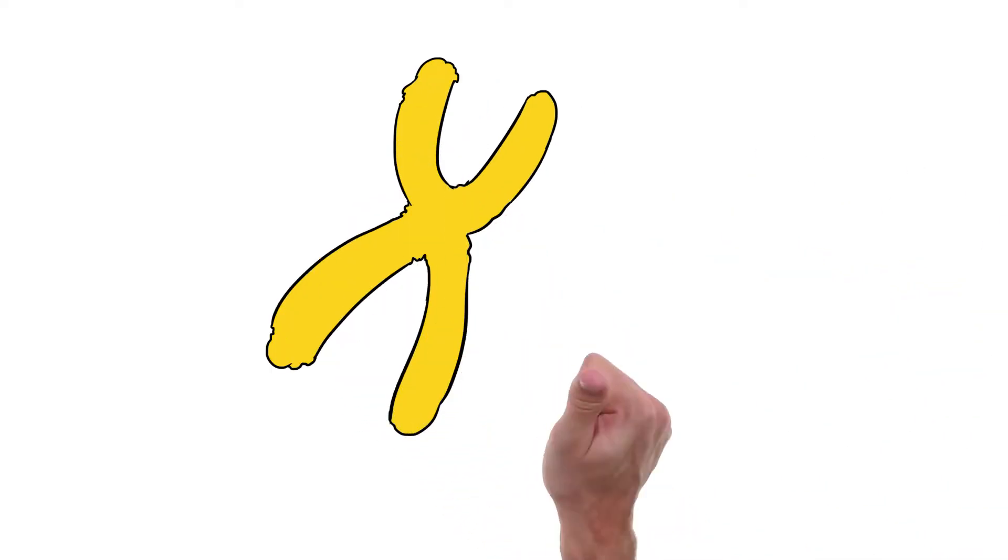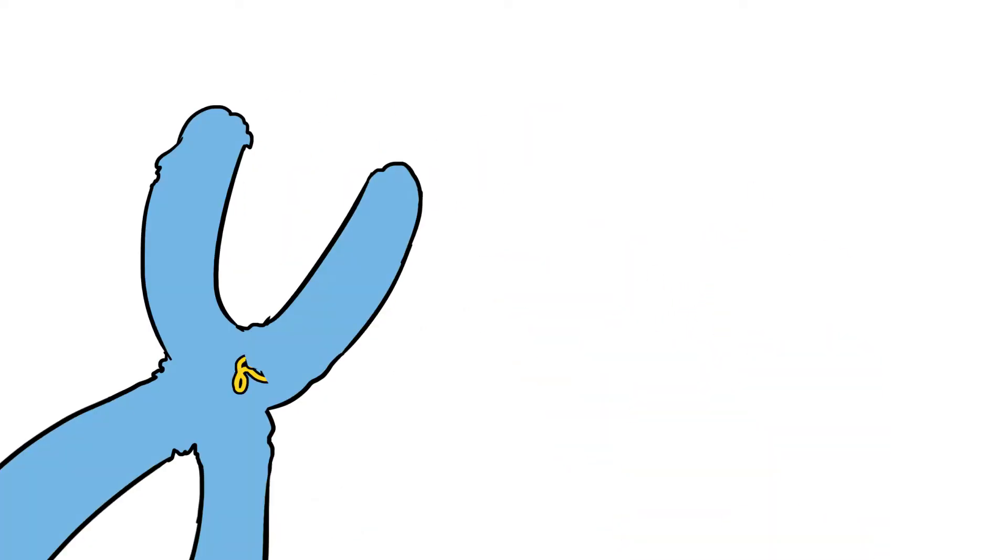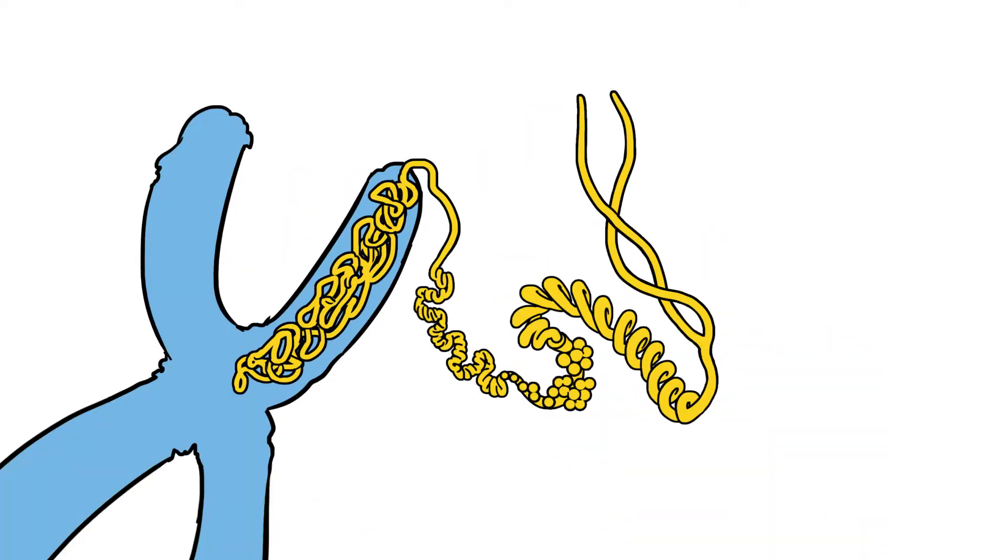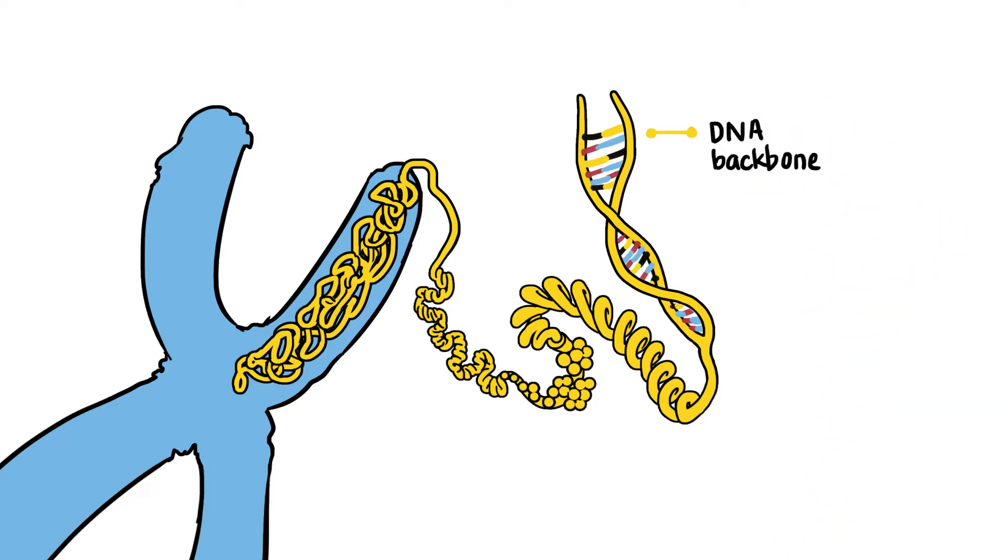When viewed as a whole, your genome is unique to you, just like a fingerprint. It's comprised of DNA, which looks like a long twisted ladder. The sides of the ladder are called the DNA backbone, and the rungs of the ladder are composed of DNA bases.